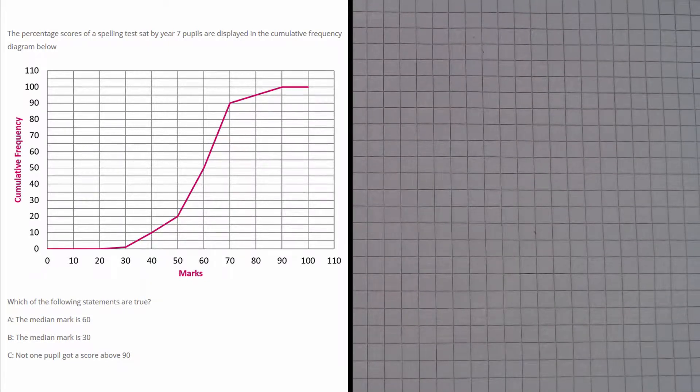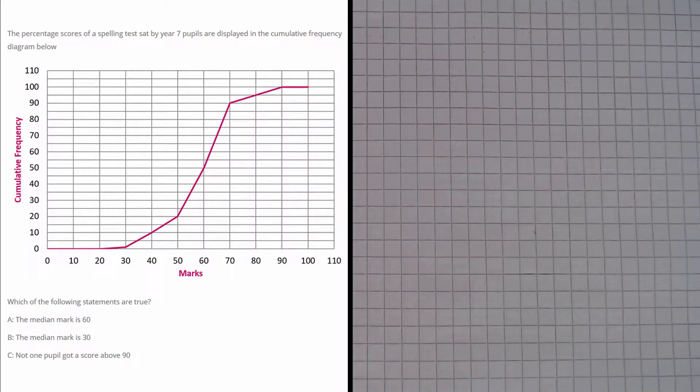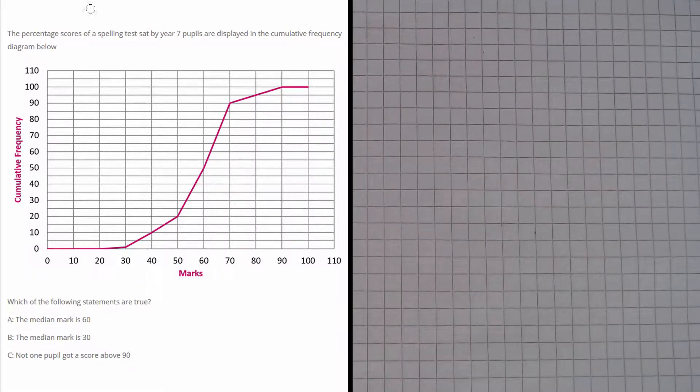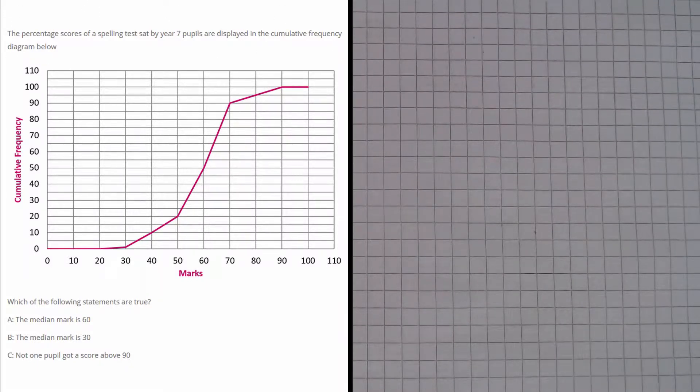So let's have a look at part A first. Part A says that the median mark is 60. Well with cumulative frequency diagrams to find the median we first need to find out how many people there are in total. Now annoyingly the question does not tell us how many people there are in total so we are going to have to use the graph.